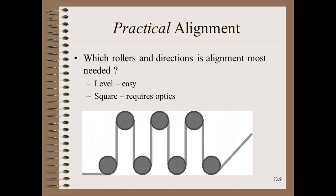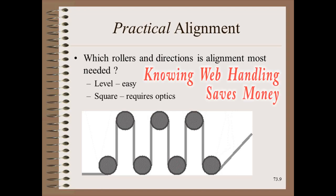Knowing web handling allows us to set maintenance standards for practical and economic problem solving — standards that are neither too tight nor too loose. Looking at a figure of an accumulator, the entering and exiting rollers may need a full alignment. However, the rollers inside the accumulator only need to be leveled. Knowing this saves money because leveling is the cheaper and easier direction of alignment. Knowing web handling will reduce the cost of aligning this machine section by more than one-half without adding extra risk.